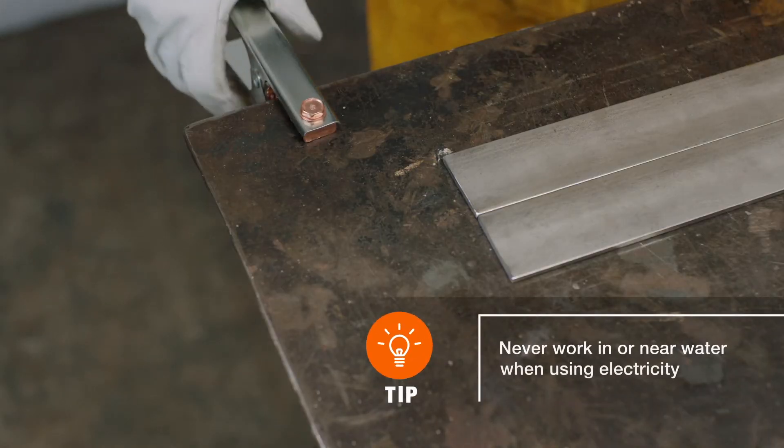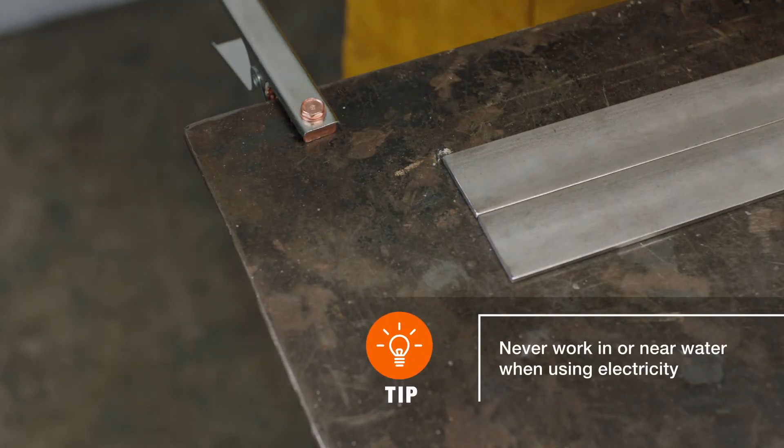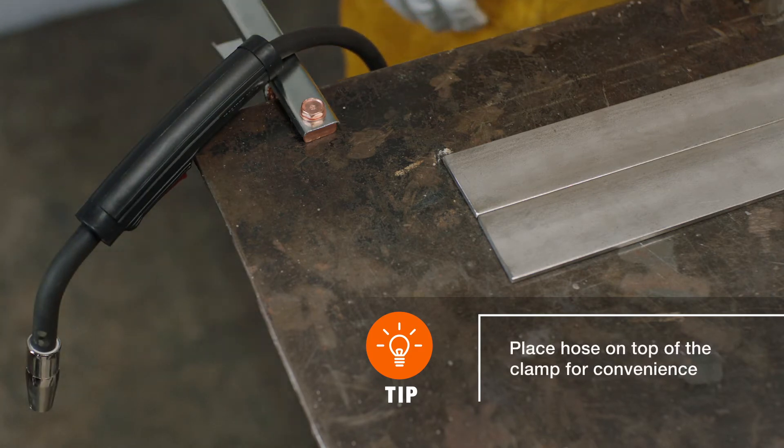Attach the ground clamp to a clean steel work surface or base metal so that the metal enclosure of the welding machine and the ground are at the same potential. Your welder will not produce an arc without it.